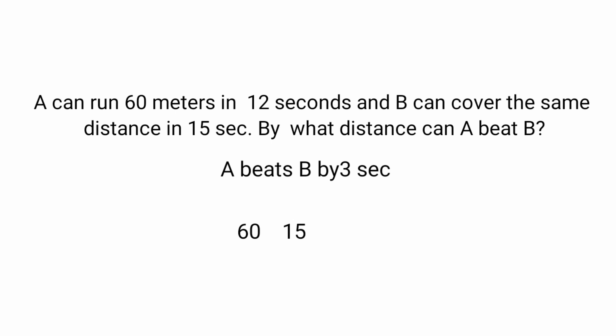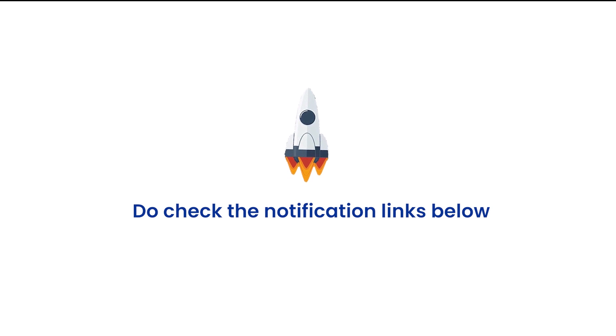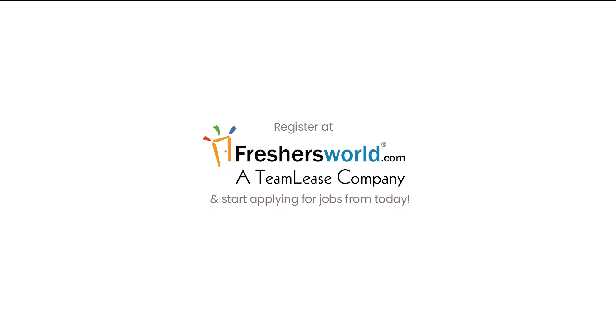To find the distance by which A beats B, calculate the distance B covers in 3 seconds. B covers 60 meters in 15 seconds. Cross-multiplying: 60 × 3 = 15 × ?, so ? = (60 × 3) / 15 = 180 / 15 = 12 meters. Therefore, A beats B by 12 meters. Thanks for watching!